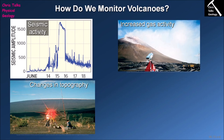Geologists obtain topographic data in several ways: global positioning satellites, satellites that produce radar images, tilt meters, and surveying equipment like that shown in this image. All of these are sufficient to show whether the ground is rising or falling. Once again, if we see the ground around the volcano beginning to rise, that's an indicator that the chance of an eruption is greatly increased.